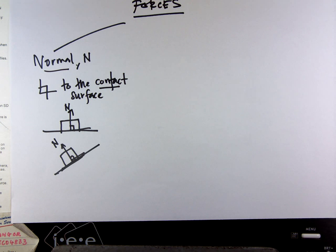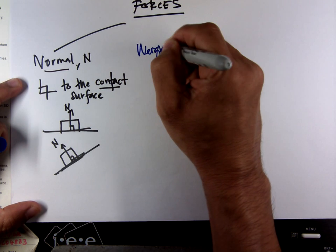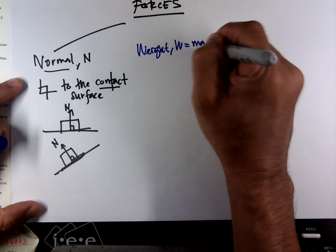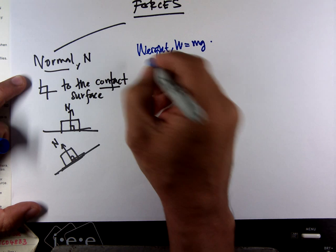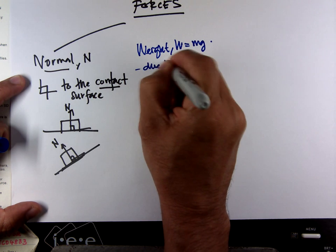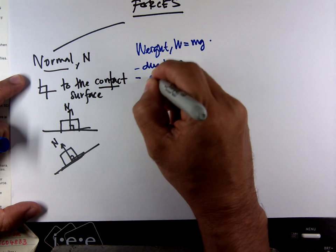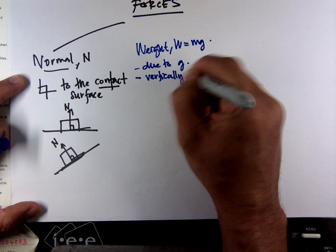Then we have weight, W equals mg. What is weight? Weight is the force due to gravitational acceleration. Always, if I can use the word, vertically downwards.